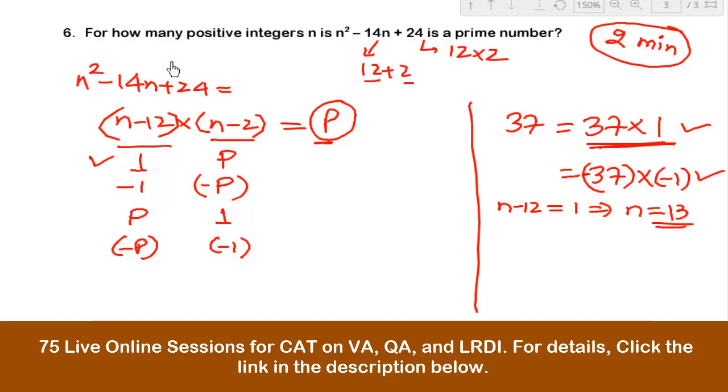13 is a prime number. But the question is not asking about n. Here n can be any positive integer, so there's no necessity for n to be prime. This expression has to be prime. So n is equal to 13.